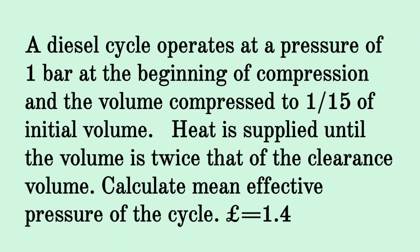Given question: A Diesel cycle operates at a pressure of 1 bar at the beginning of compression, and the volume is compressed up to 1/15 of the initial volume. Heat is supplied until the volume is twice that of the clearance volume. Calculate the mean effective pressure of the cycle. Gamma is equal to 1.4.